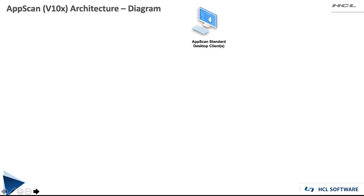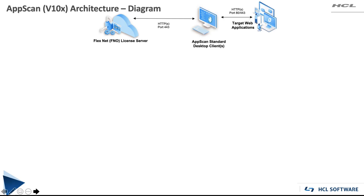Let's start by looking at AppScan Standard. AppScan Standard is a desktop client used for doing dynamic analysis, and it's the easiest of our products to install. It typically just needs to have a license. With version 10, we're working with FlexNet or FNO license server. This is a cloud-based offering which allows the license to be picked up from the machine, assuming that we have connectivity over port 443 to the license server.